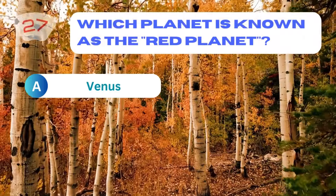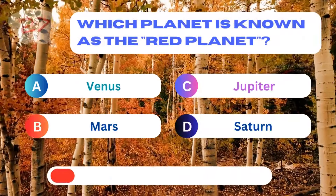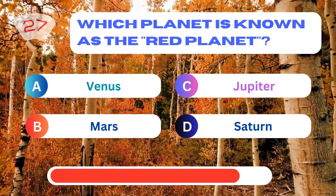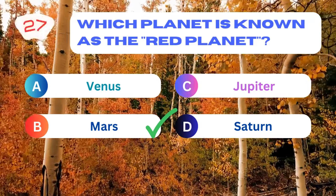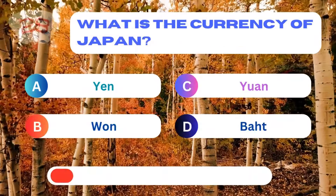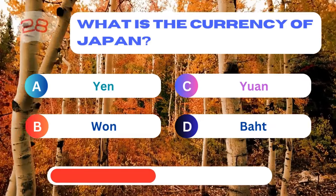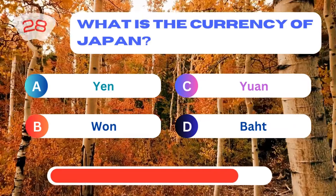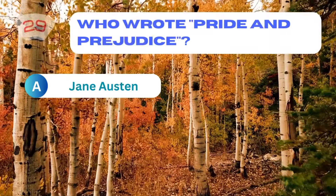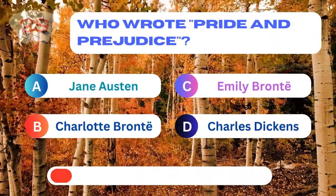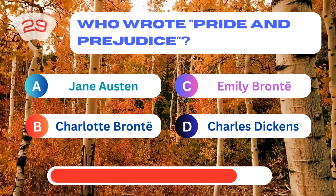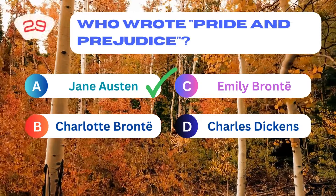Which planet is known as the red planet? Mars. What is the currency of Japan? Yen. Jane Austen.